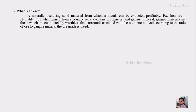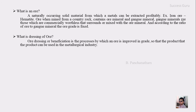So ore is a metallic mineral deposit that can be extracted profitably. Generally ore will not come in a native state; it will be mixed with some unwanted, worthless gang minerals. According to the ratio between the ore and the gang, the ore is graded. That is the generalized definition for ore, and the next topic is: what is the dressing of ore?